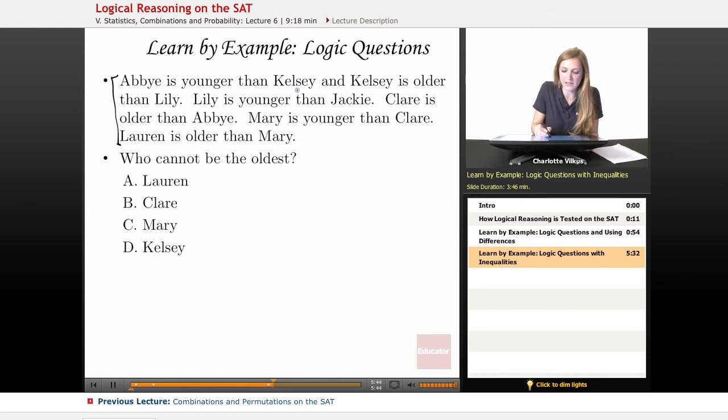So here we have Abby is younger than Kelsey, and then it's going to keep going, Kelsey is older than Lily. Okay, as soon as I've got multiple people in here, I'm probably going to want to put in some variables for them.